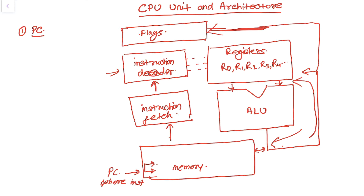We also have the instruction decoder after the instruction fetch. Once the program counter directs the instruction address, the CPU fetches the instruction, which then goes into the instruction decoder. The instruction decoder interprets the instruction fetched into the CPU, and according to the instruction, it finally performs the operation in the ALU.